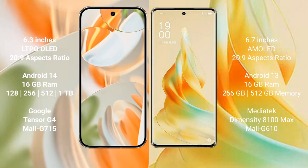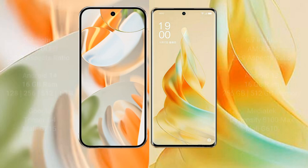Google Pixel 9 Pro comes with 16GB RAM and 256GB, 512GB, or 1TB internal storage, powered by the Google Tensor G4 processor. Oppo Reno 9 Pro comes with 16GB RAM and 256GB or 512GB internal storage, powered by the MediaTek Dimensity 8100 Max processor.